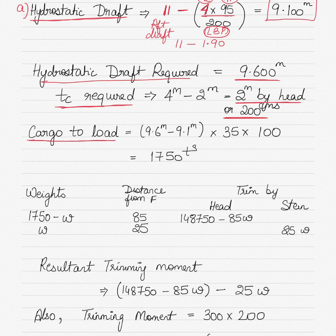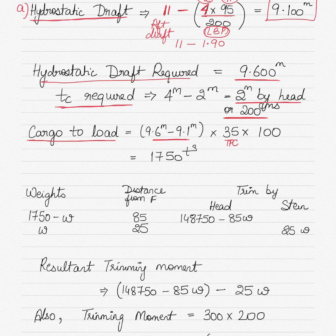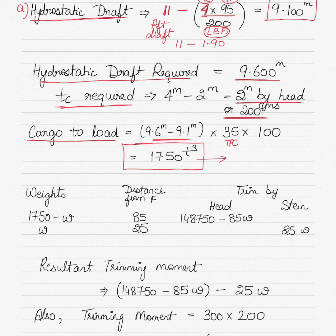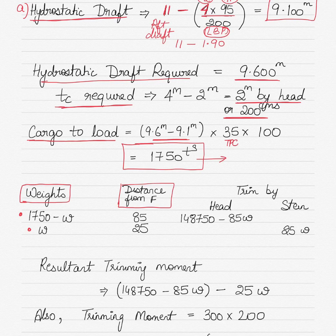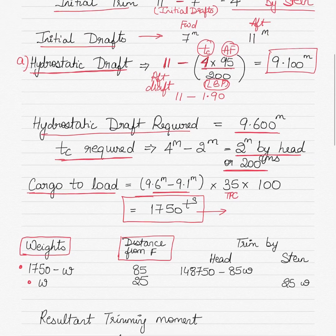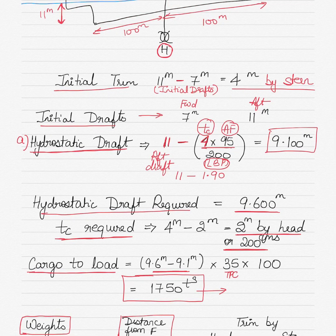The cargo to load is determined by the sinkage required: 9.6 minus 9.1 meters equals 0.5 meters sinkage. Multiplying by TPC (35) and by 100 gives a total cargo to load of 1750 tons. This needs to be distributed between number one and number four lower hold. Assume weight W is loaded in one hold and 1750 minus W in the other.